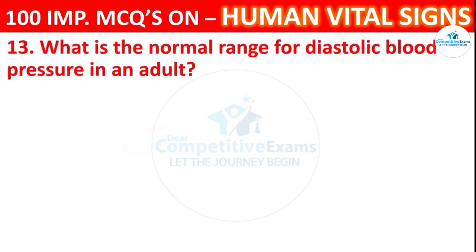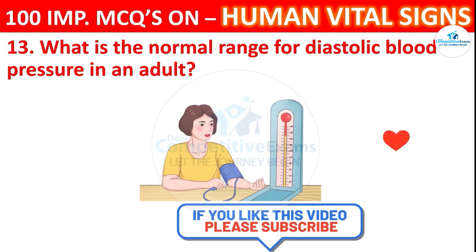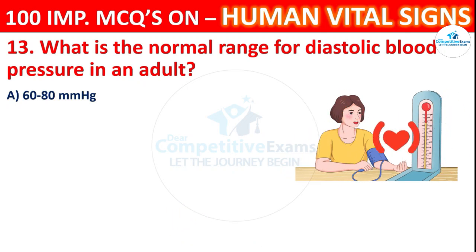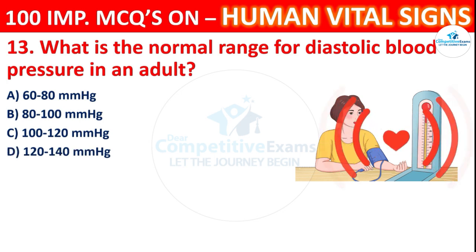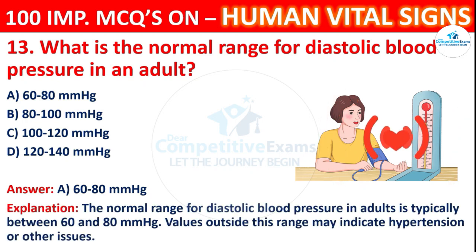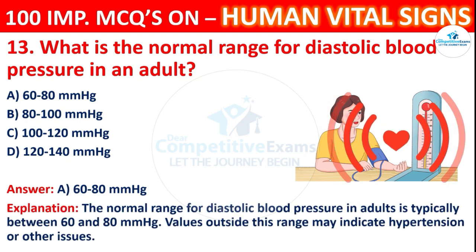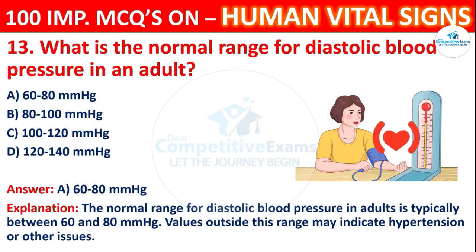Question 13: What is the normal range for diastolic blood pressure in an adult? Options: 60 to 80 mmHg, 80 to 100 mmHg, 100 to 120 mmHg, or 120 to 140 mmHg. The correct answer is A, 60 to 80 mmHg. The normal range for diastolic blood pressure in adults is typically between 60 and 80 mmHg. Values outside this range may indicate hypertension or other issues.